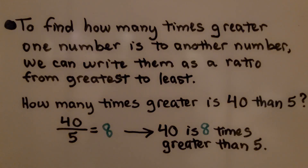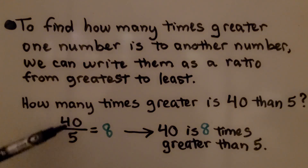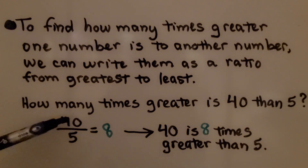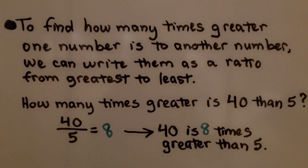How many times greater is forty than five? We write them as a ratio from greatest to least — and this is a division problem. We have forty divided by five, that's equal to eight. We know forty is eight times greater than five.